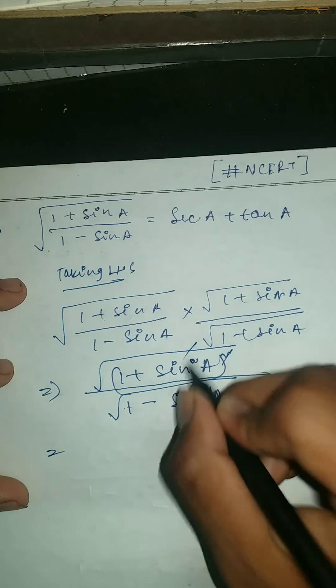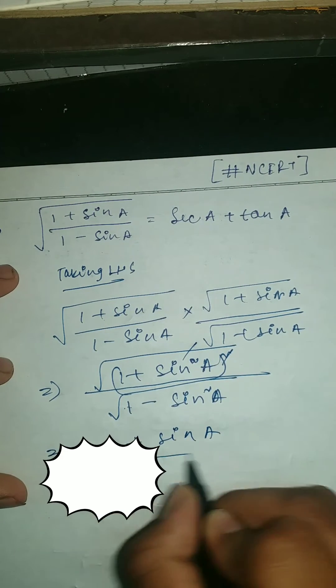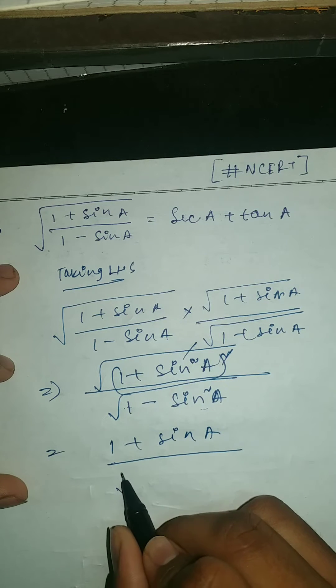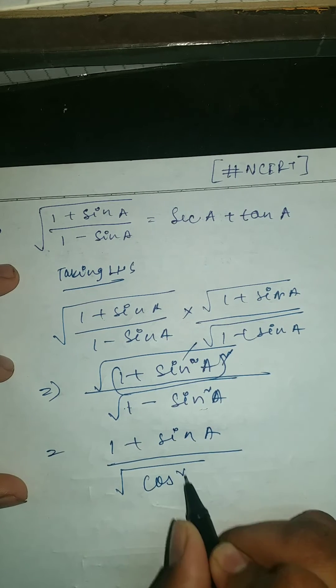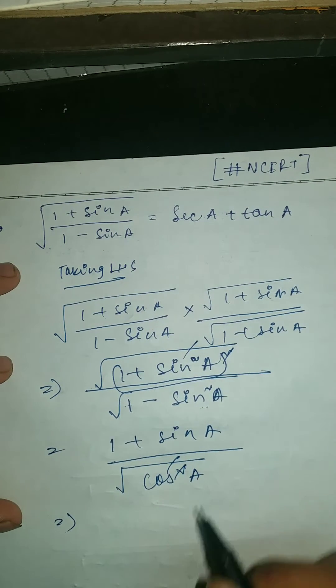Here we can cancel this. So we got 1 + sin A, and here we can rewrite this as square root of cos² A. Now here what we can see, this is cancelled.